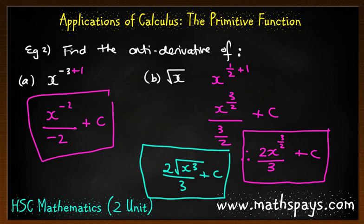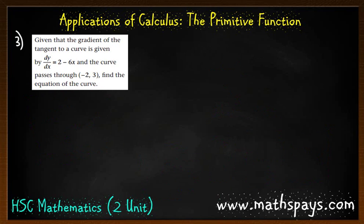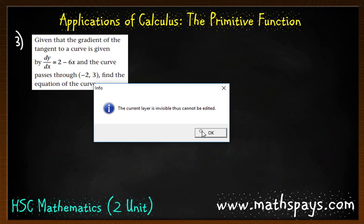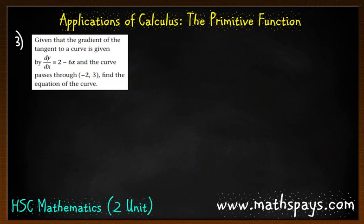All right, now two more questions for you to do. Have a crack at this one. I'm going to give you the hint that you will be able to find the constant, because there is an x and there is a y coordinate. Go ahead and see how you go. Okay, so given that the gradient of the tangent to the curve is given by dy/dx equals 2 minus 6x, and the curve passes through, well we're told that x equals negative 2, we're told that y equals 3.